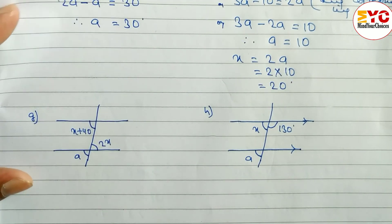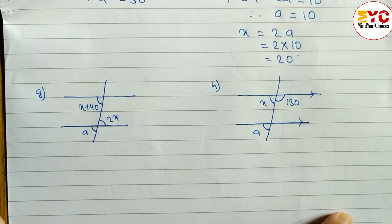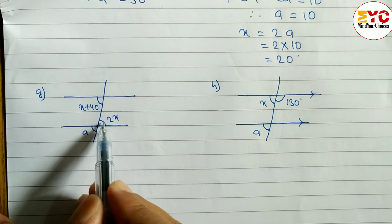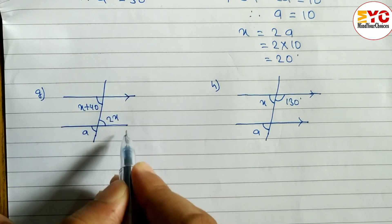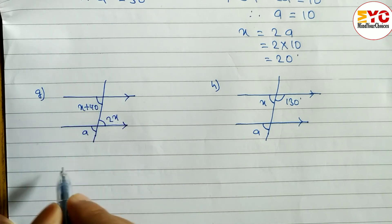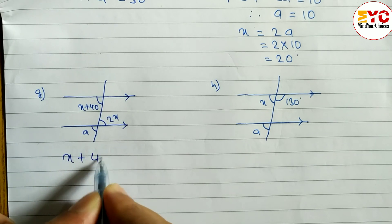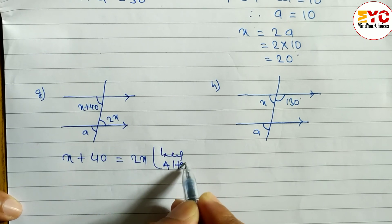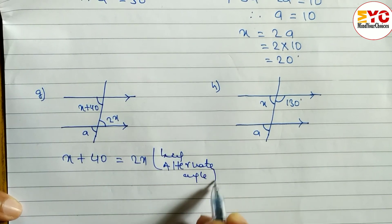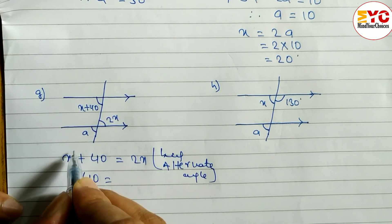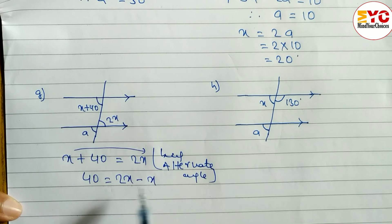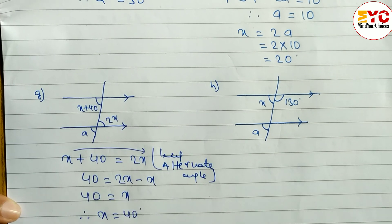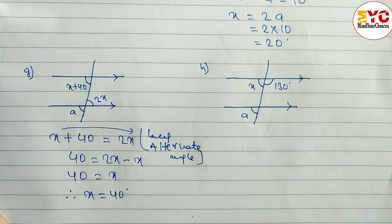Now look at the next question. We can see that this angle and this angle are equal, and this and this are also equal. First, take the alternate pair — two angles inside the parallel lines — so alternate angles: x + 40 = 2x. Rearranging: 40 = 2x − x, therefore x = 40 degrees.